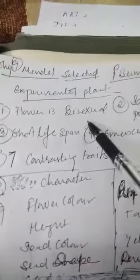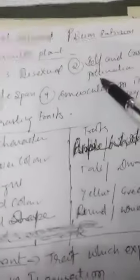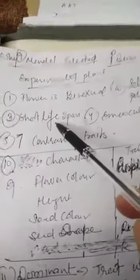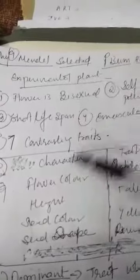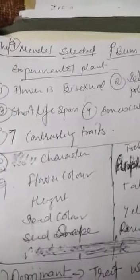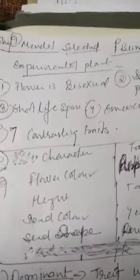Pisum sativum Mendel selected because the flower is bisexual, so we can observe the second generation, then again the third generation. So that very short life span is useful for the study purposes, for research purposes.